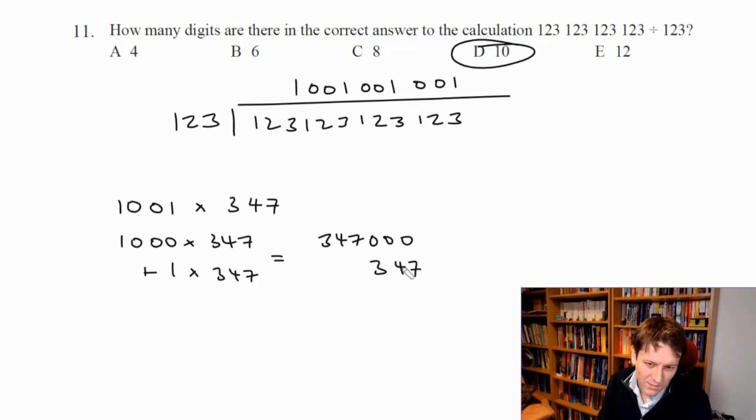The fact we multiplied by a thousand here means the 347 just slots nicely on top of the zeros and gives us these sorts of repeating patterns.